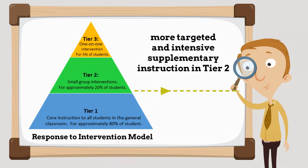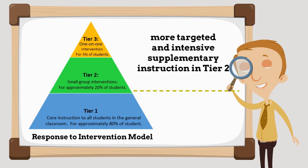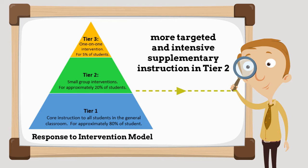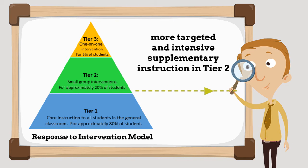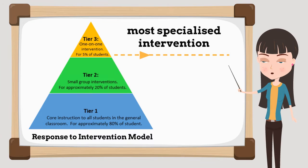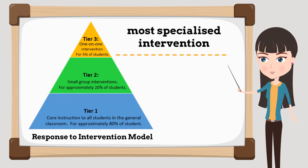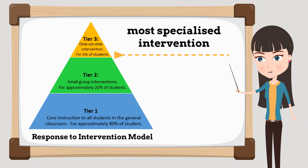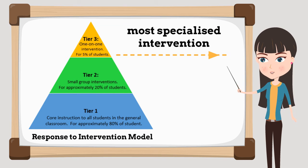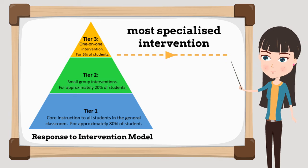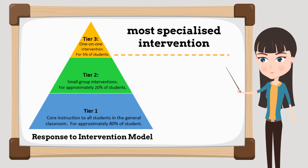Students who do not make sufficient progress in Tier 1 receive more targeted and intensive supplementary instruction in Tier 2. Tier 3 offers the most specialised interventions, addressing specific needs for students who do not respond to Tier 2 intervention. At this tier, you can expect to see students working from an individual education plan, and these students should be considered for specific learning disability evaluation.